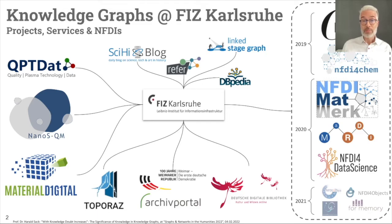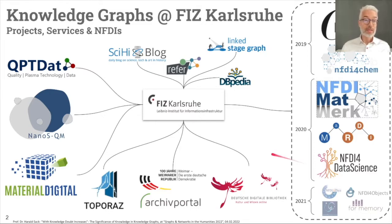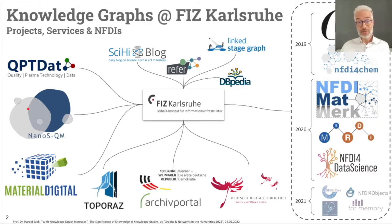First, I want to give a brief overview of the context and background of what my group, Information Service Engineering at FIZ Karlsruhe, is working on. One of our main building blocks is the creation of knowledge graphs for different kinds of sciences — for example, in the realm of plasma technology, plasma physics, and also for nanosafety, which is research related to nanoparticles and their security and safety measures, or for material sciences.